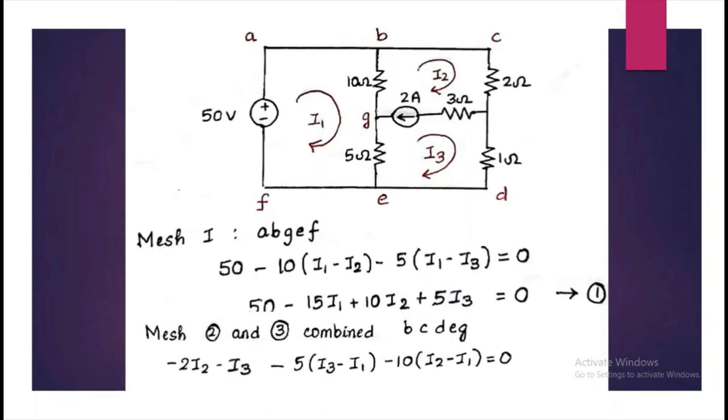Then, let us write the equation for meshes 2 and 3 combined. That will be minus 2(i2 minus i3) minus 5(i3 minus i1) minus 10(i2 minus i1) is equal to 0. Now, rearrange that equation to get equation number 2.